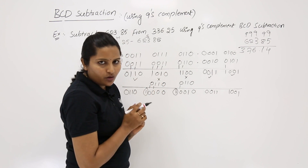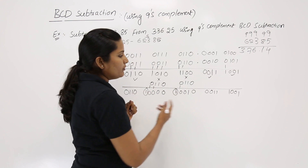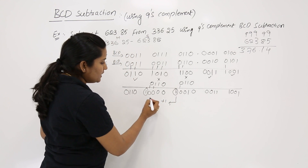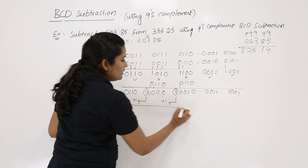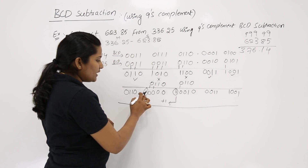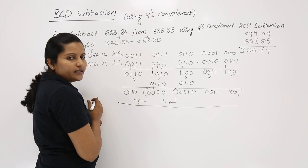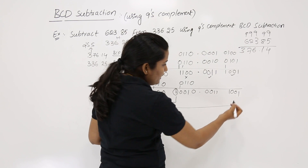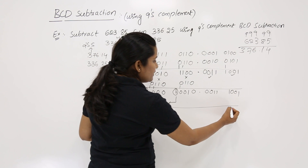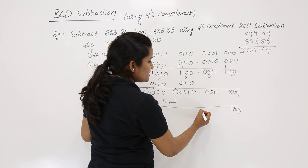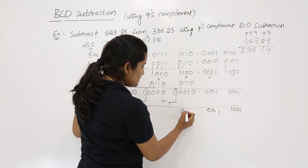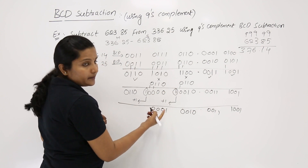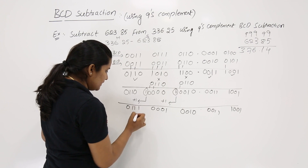After correcting the BCD code, we do carry follow-up. There are 2 carries from the correction step that must be propagated to the next bits. The decimal-point groups are taken as-is with no carry follow-up needed. After following up the carries, the affected digit group becomes 0010 and another group becomes 0111.